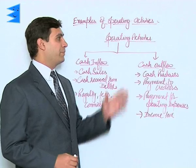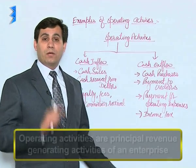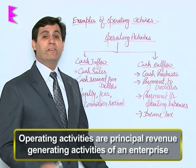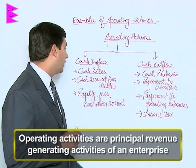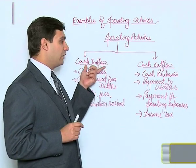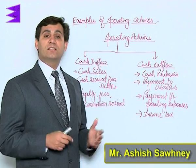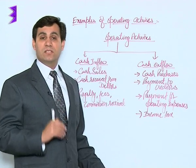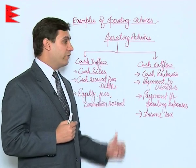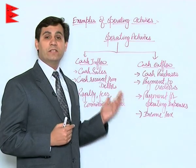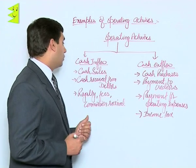Let us consider a few examples of operating activities. Remember, operating activities are the principal revenue-generating activities of an enterprise. It would have two parts: inflow and outflow. The activities which result in cash coming into the business are called cash inflows, whereas those which result in outflow of cash are categorized accordingly.